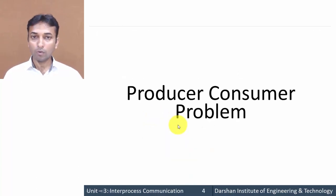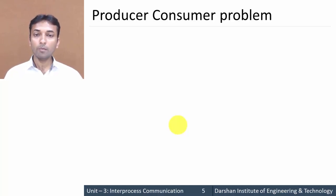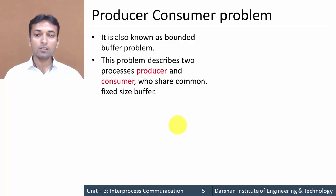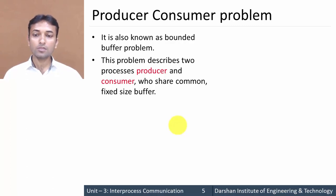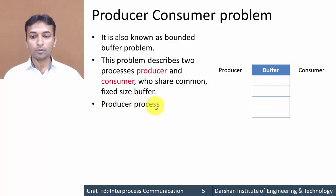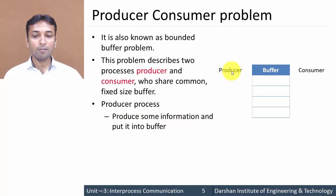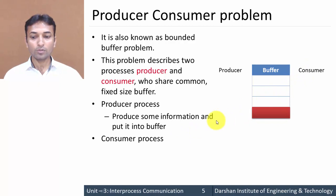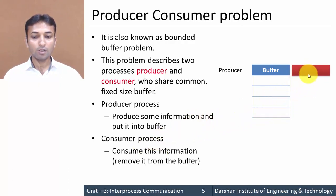Now let us move to the producer-consumer problem. The producer-consumer problem is also known as the bounded buffer problem. In this problem there are two types of processes — a producer and a consumer — and both share a common fixed-size buffer. Here the buffer has four slots. The producer process produces some information and puts it into the buffer, while the consumer process consumes information by removing it from the buffer.